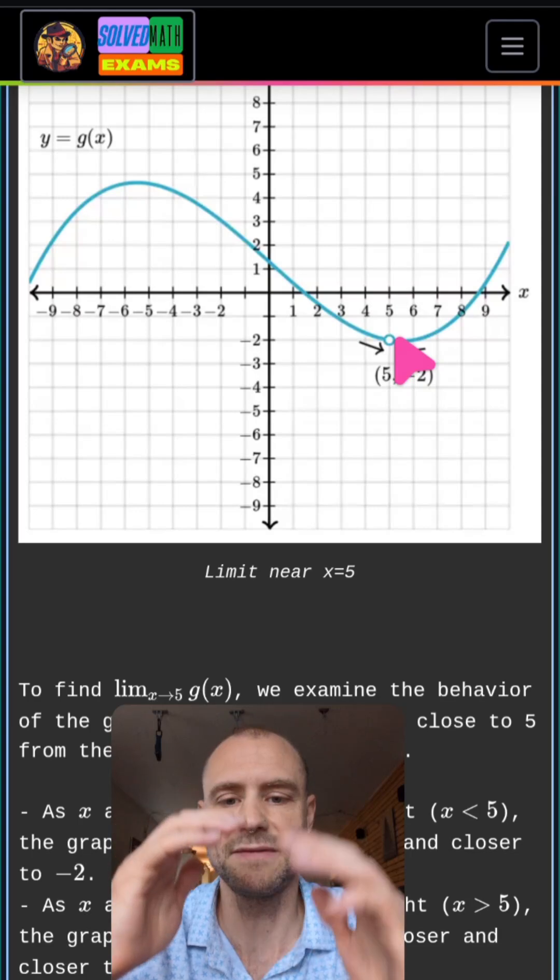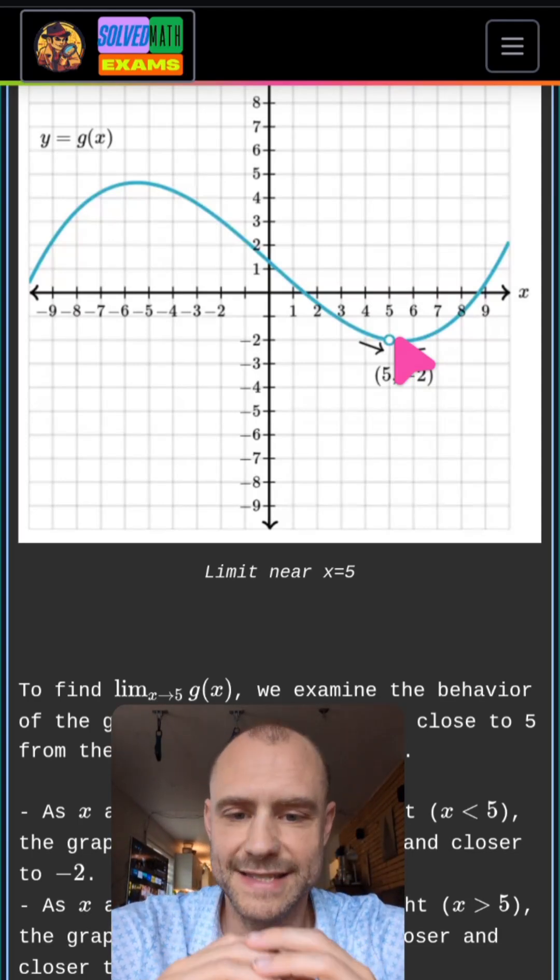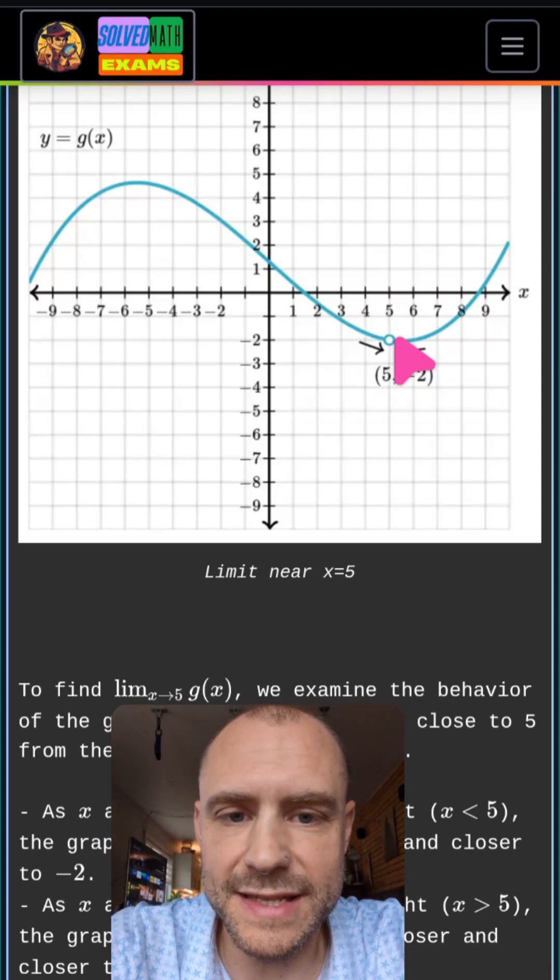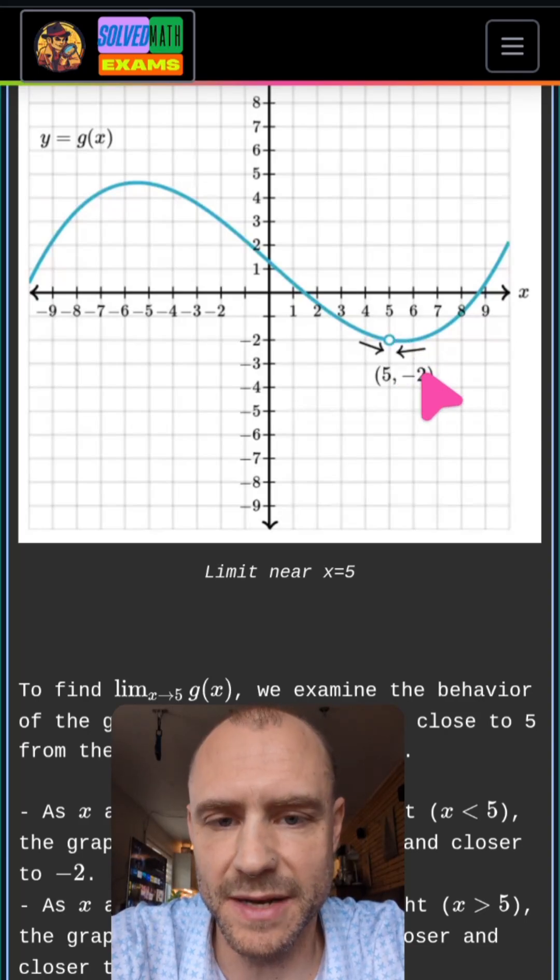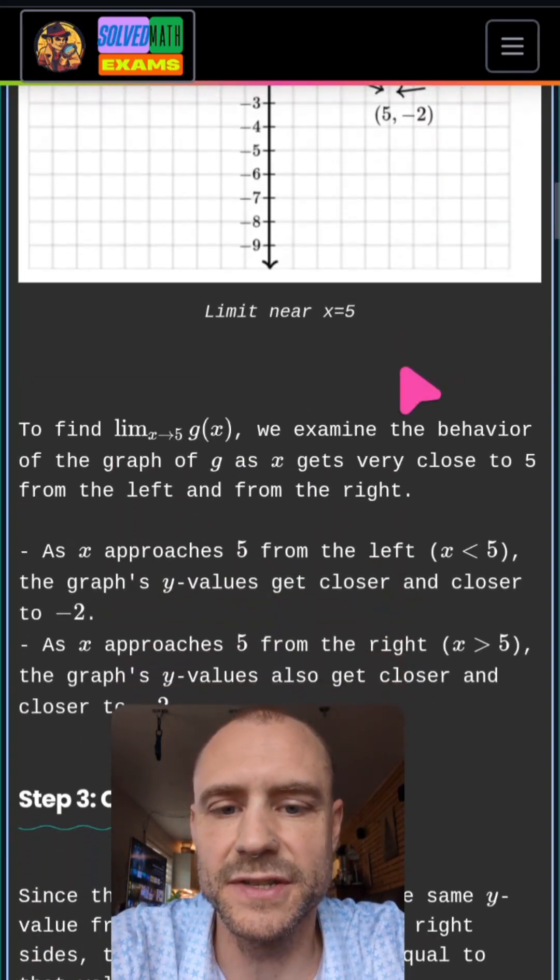Since they're negative 2 on the left and negative 2 on the right, and it's the same thing, we can say that this limit exists. They have to match up and they have to be finite numbers. They do in this case, so this limit exists.